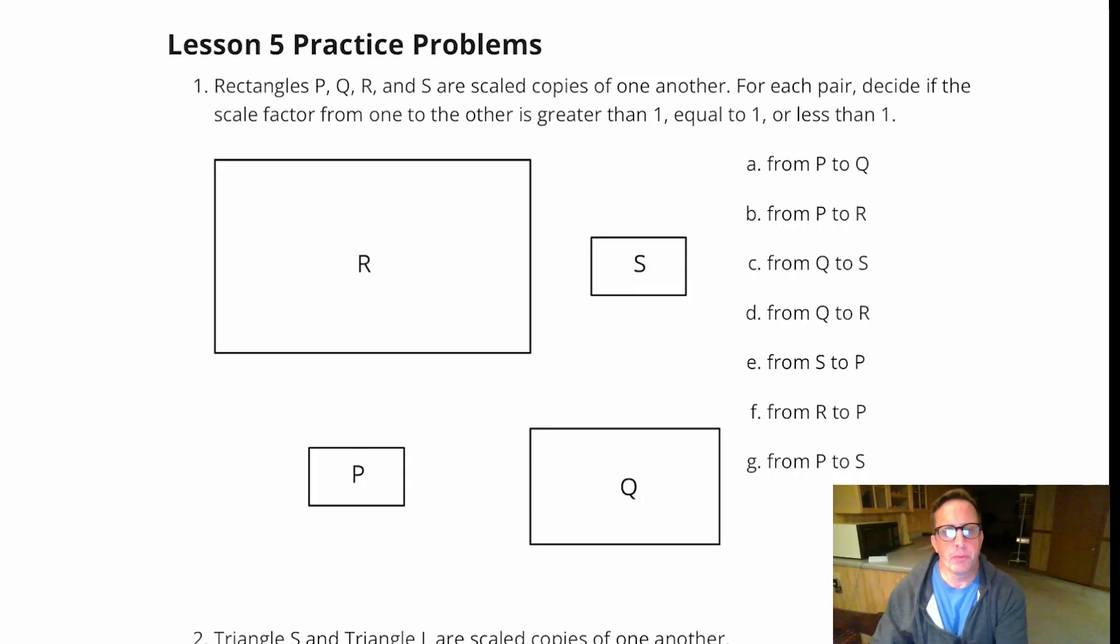Lesson 5 Practice Problems. We've got rectangles P, Q, R, and S that are scaled copies of one another. For each pair, decide if the scale factor from one to the other is greater than 1, equal to 1, or less than 1.